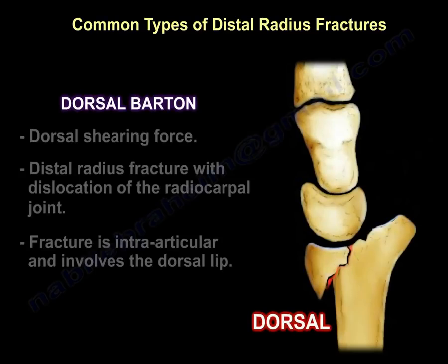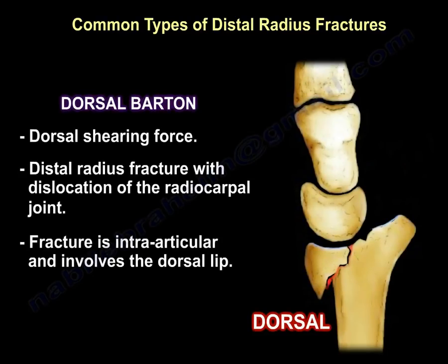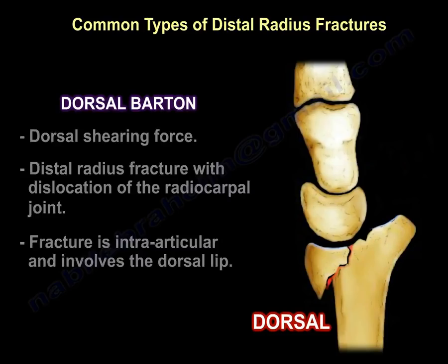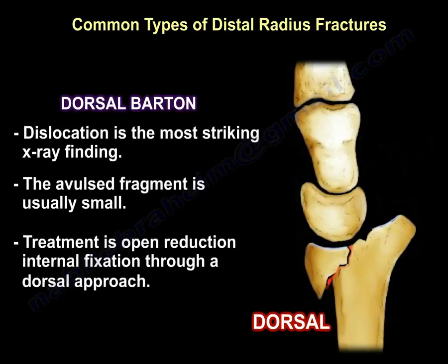Dorsal Barton fracture results from a dorsal shearing force — a distal radius fracture with dislocation of the radiocarpal joint. The fracture is intra-articular and involves the dorsal lip. You can see that the wrist is dislocated and the avulsed fragment is usually small. Treatment is open reduction internal fixation through a dorsal approach.